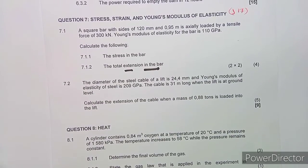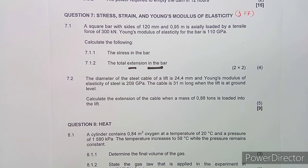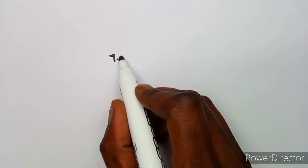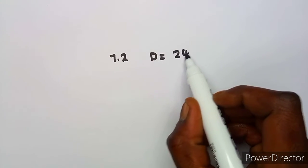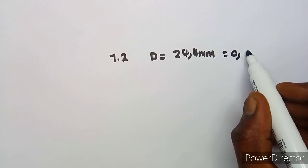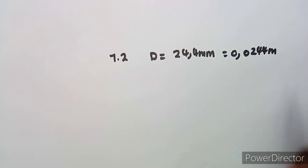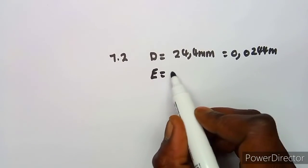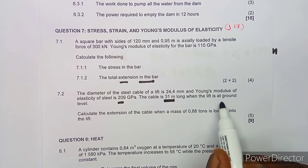Now let us look at question 7.2, where we are given a steel cable of a lift with a diameter of 24.4 millimeters. We are also given the Young's modulus of elasticity for steel. Converting to meters: 24.4 divided by 1000 gives 0.0244 meters. The Young's modulus E is 209 gigapascal.